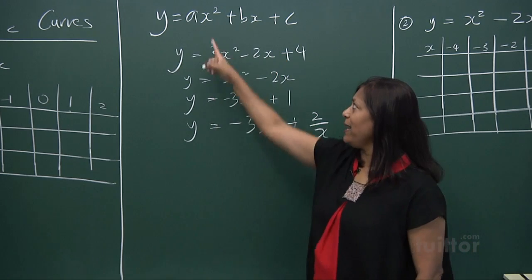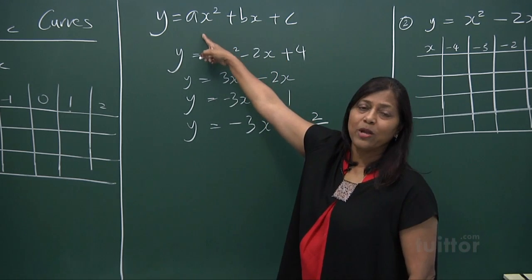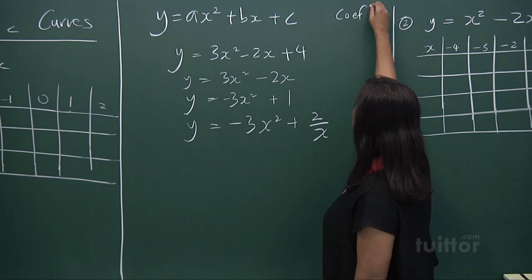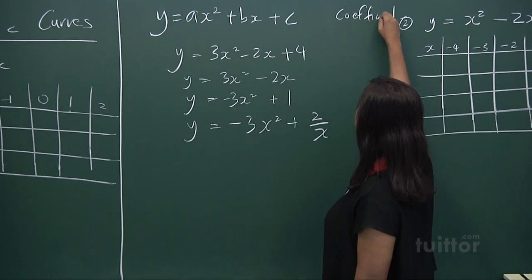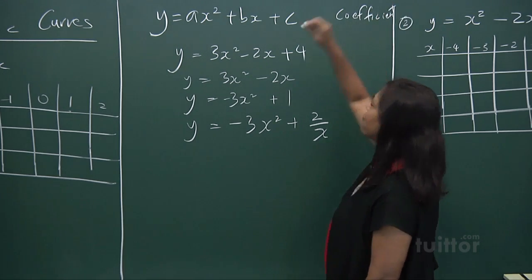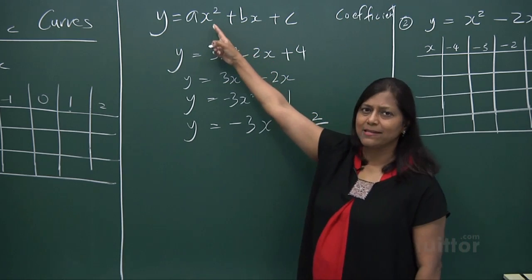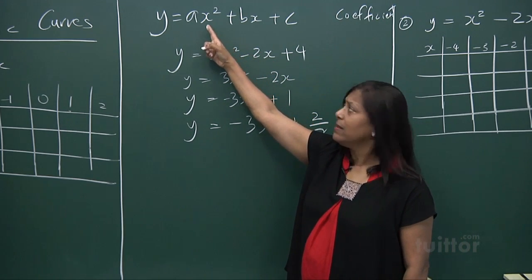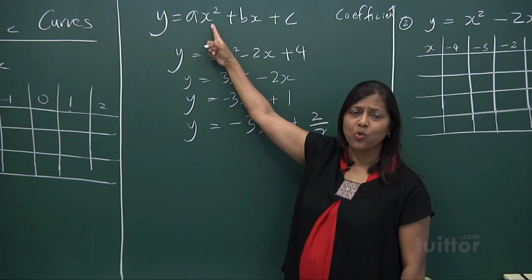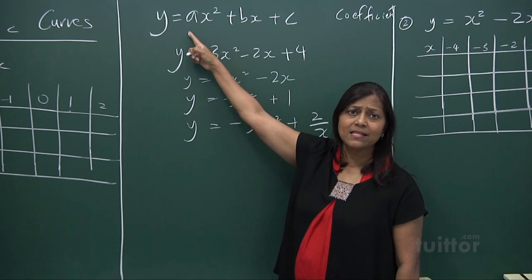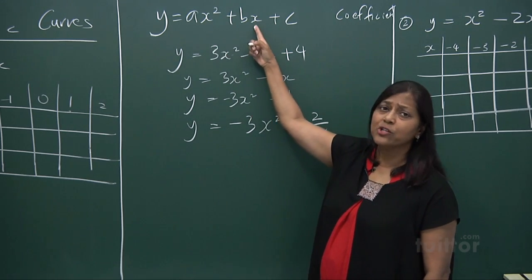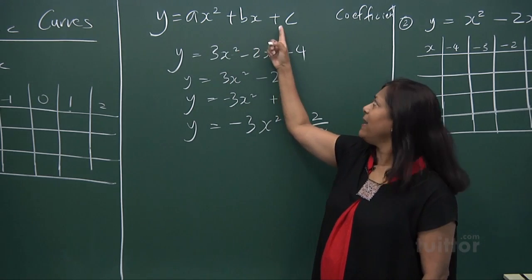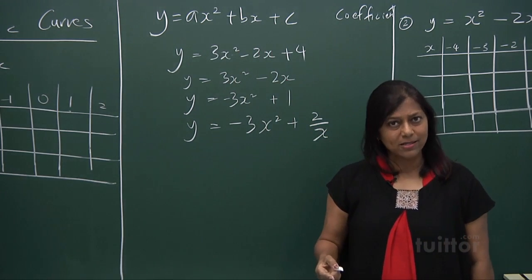Your a — the coefficient — when we say the word coefficient, we mean the number in front of x or x squared or whatever variable. The coefficient of x squared is a, the coefficient of x is b, and c is a constant.